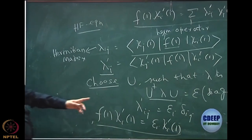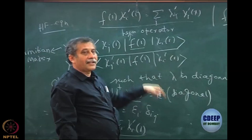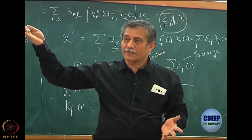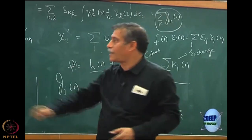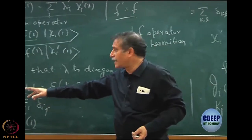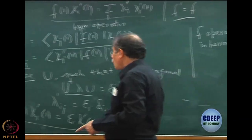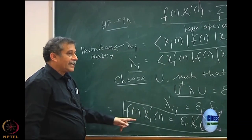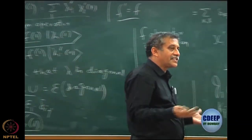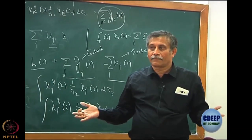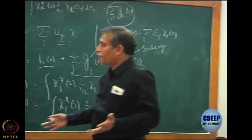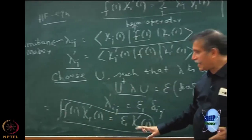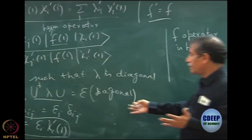Because now lambda' in the new basis is diagonal by my choice — and that choice is dictated by how to diagonalize a matrix. That is the mathematics part, which all of you should know: how to diagonalize a Hermitian matrix and how to get U. Provided I get U, what I am now suggesting is that the new spin orbitals can be chosen such that they are eigenfunctions of the Fock operator. The new Fock operator is the same as the old one.